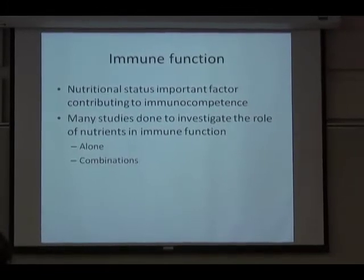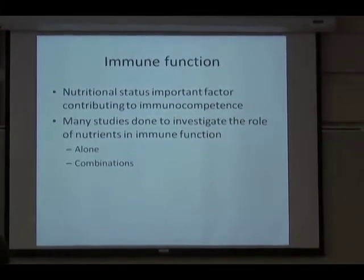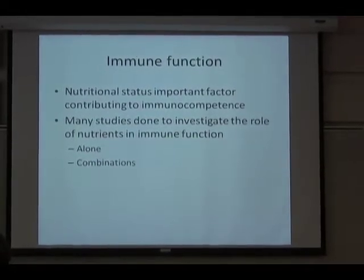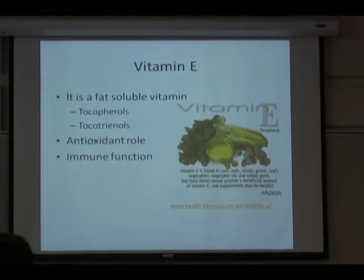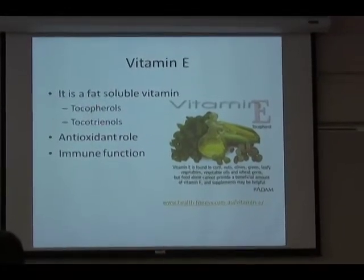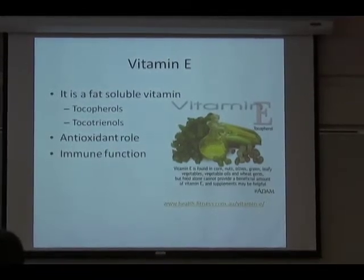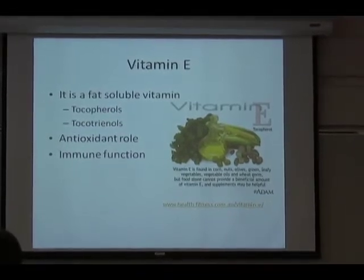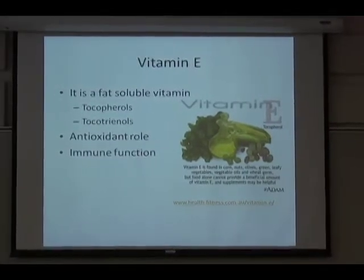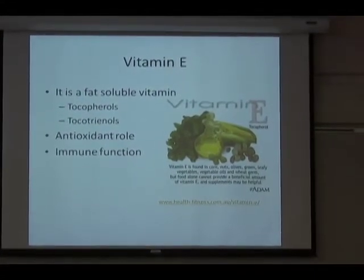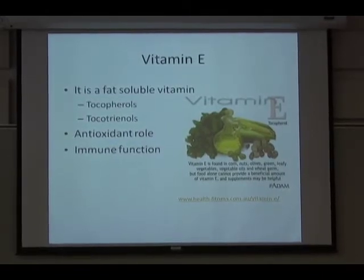Your nutritional status really does influence how immunocompetent you are, and due to this, a lot of studies have been done to investigate the impact of nutrients on immune function. I'll be focusing on vitamin E. Vitamin E has important effects in your body — we have the tocotrienols and the tocopherols, where the tocopherols are the biologically active form of the vitamin. Vitamin E is basically known for its antioxidant properties: it is able to prevent lipid peroxidation and scavenge free radicals so that they don't damage tissues. Because of this antioxidant function, it has been shown to have an influence on immune function. Here are some food sources of vitamin E.